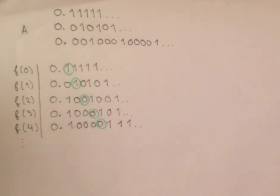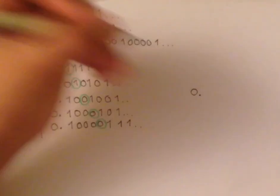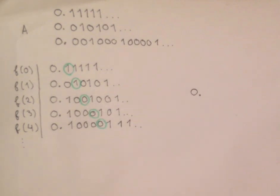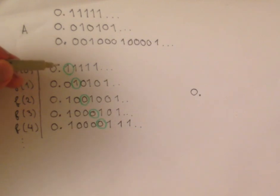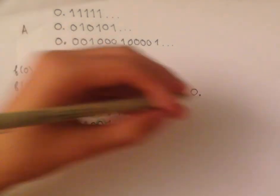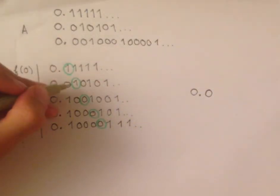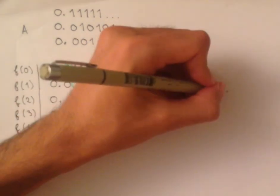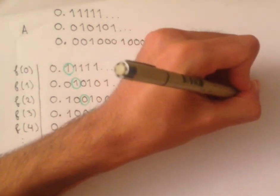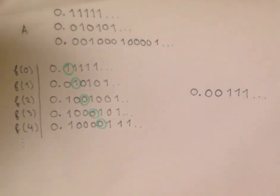We're going to construct a new number using these diagonal digits, which isn't going to appear on the list. We start with 0-point, because our number has to be between 0 and 1. Then we look at the first digit of the first element — that's 1 — and we do the opposite, which is 0. Then another 1, so we write another 0. Here we've got a 0, so we do 1. A 0, so we do 1. We just keep on doing this process as we go down the list.